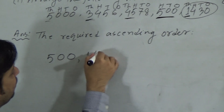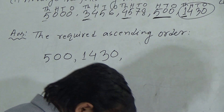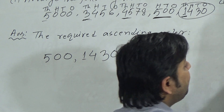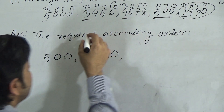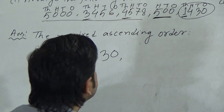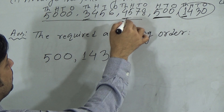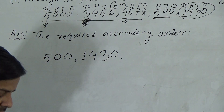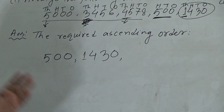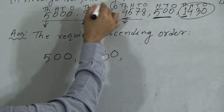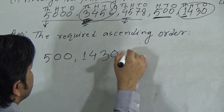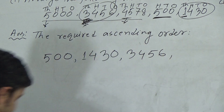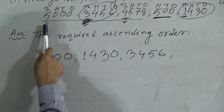Next, comparing the remaining three numbers — 5000, 3456, and 4578 — their thousands digits are 5, 3, and 4 respectively. Three is the smallest among these thousands digits, so 3456 is the next smallest number. We write 3456.